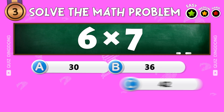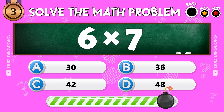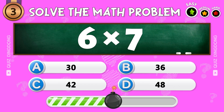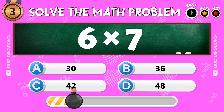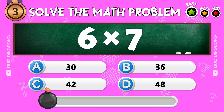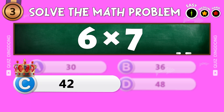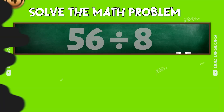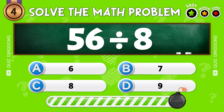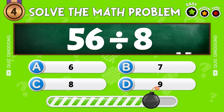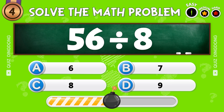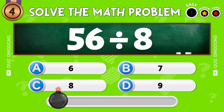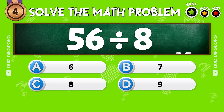Third question: what is 6 times 7? Correct, the answer is 42. Next question: what is 56 divided by 8? Well done, the answer is 7.